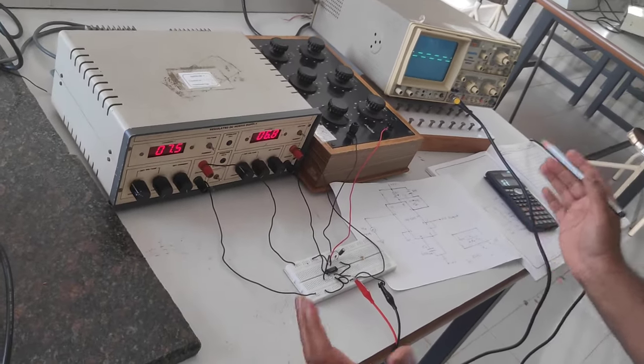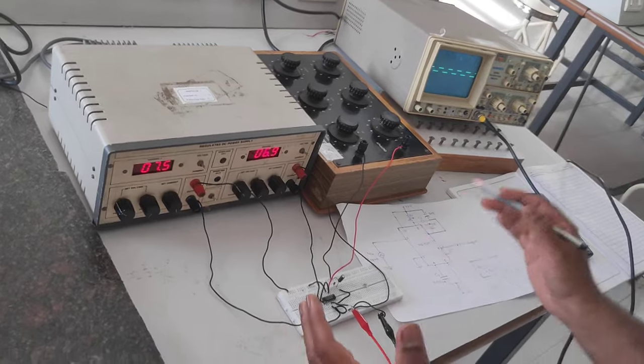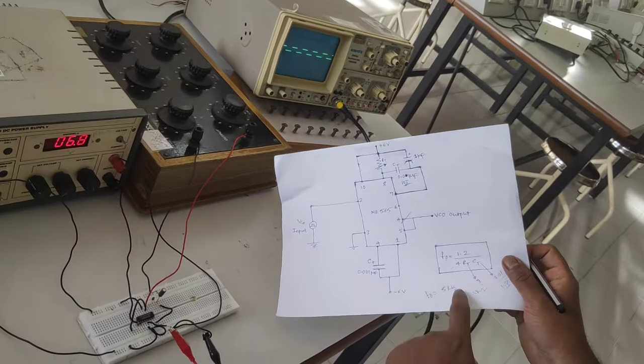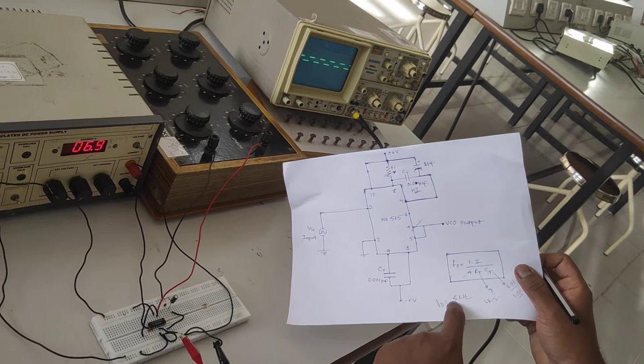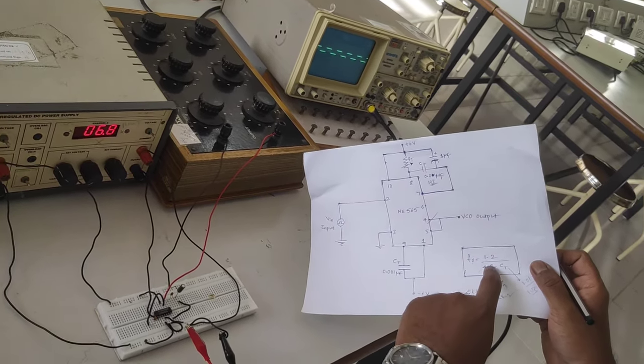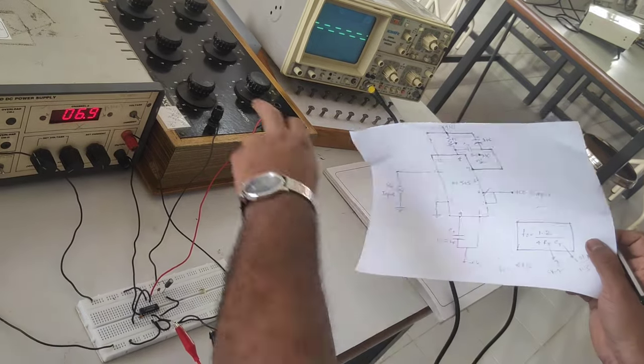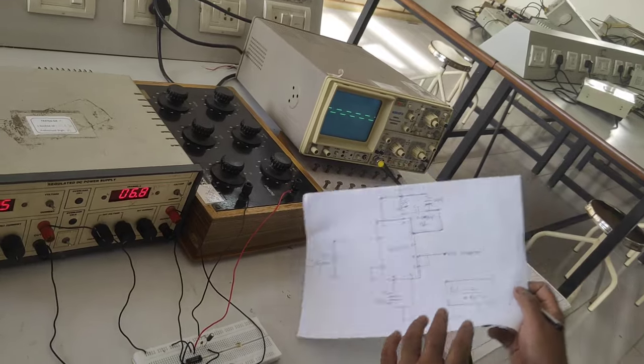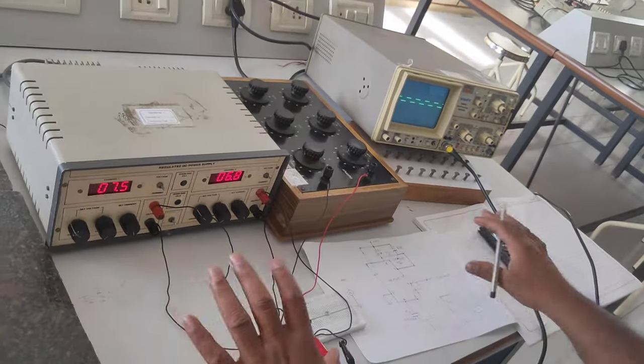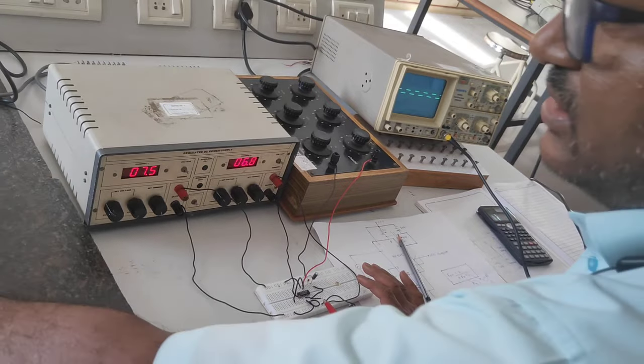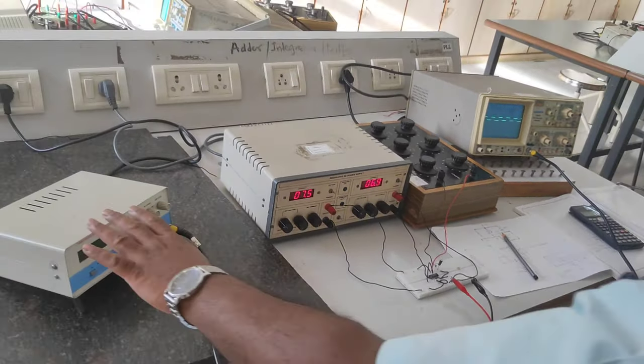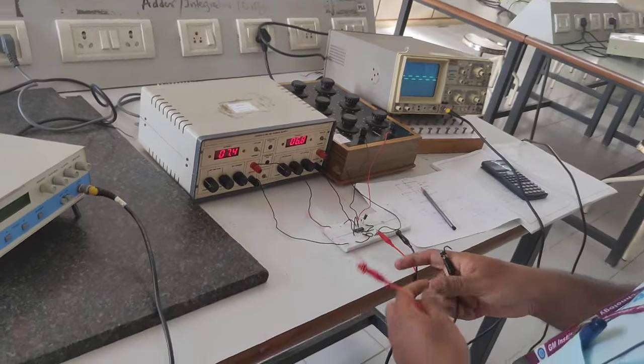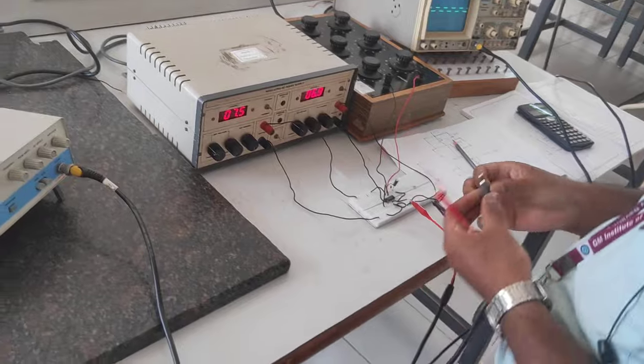So verify the practical VCO with the theoretical VCO. This is the first step you have to do. The formula involved is F0 is 1.2 divided by 4 RTCT. F0 is given 5k, you need to calculate RT and I have kept it around 6k and 0.01 microfarad. This is the value you have to find out and keep it in DRB. Don't switch on the FG up to this. FG should be in the off condition.